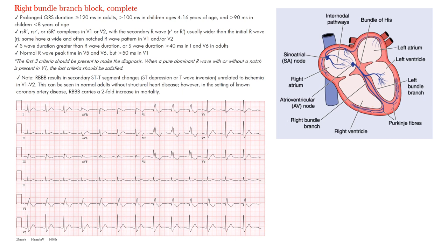In right bundle branch block, the right bundle branch activates the right ventricle. Conduction starts at the sinus node, comes down, depolarizes the atria, reaches the AV node, and tries to go down both sides. On the right side it meets a block, but proceeds normally down the left side, depolarizing the left ventricle fine. There's a delay on the right side, so the right ventricle is depolarized by slow cell-to-cell depolarization from left to right.